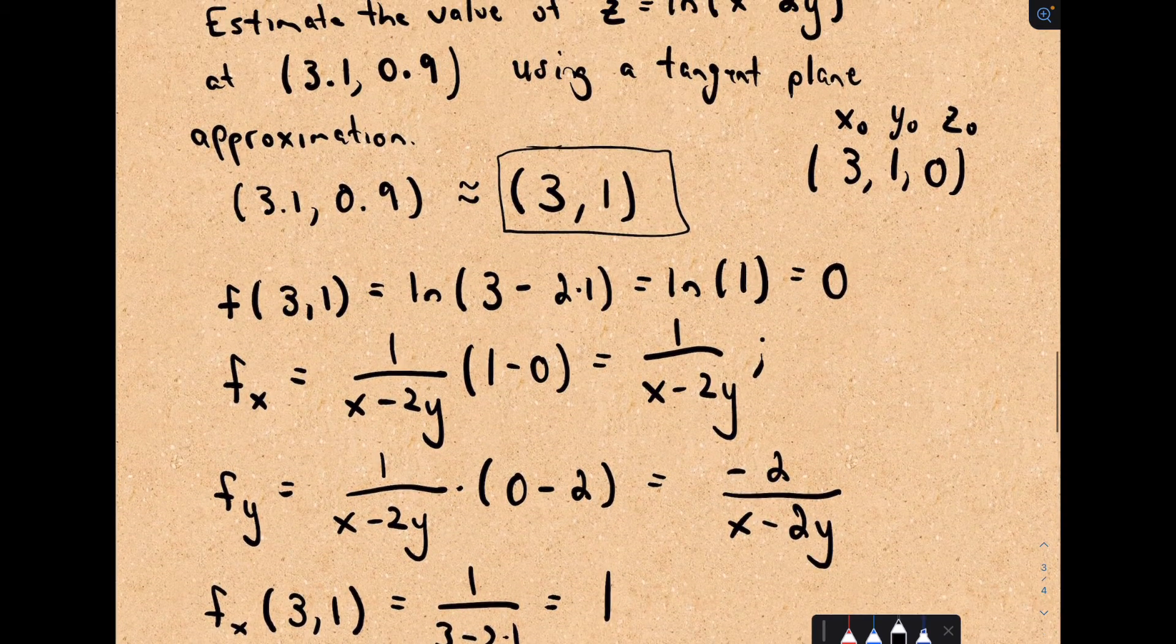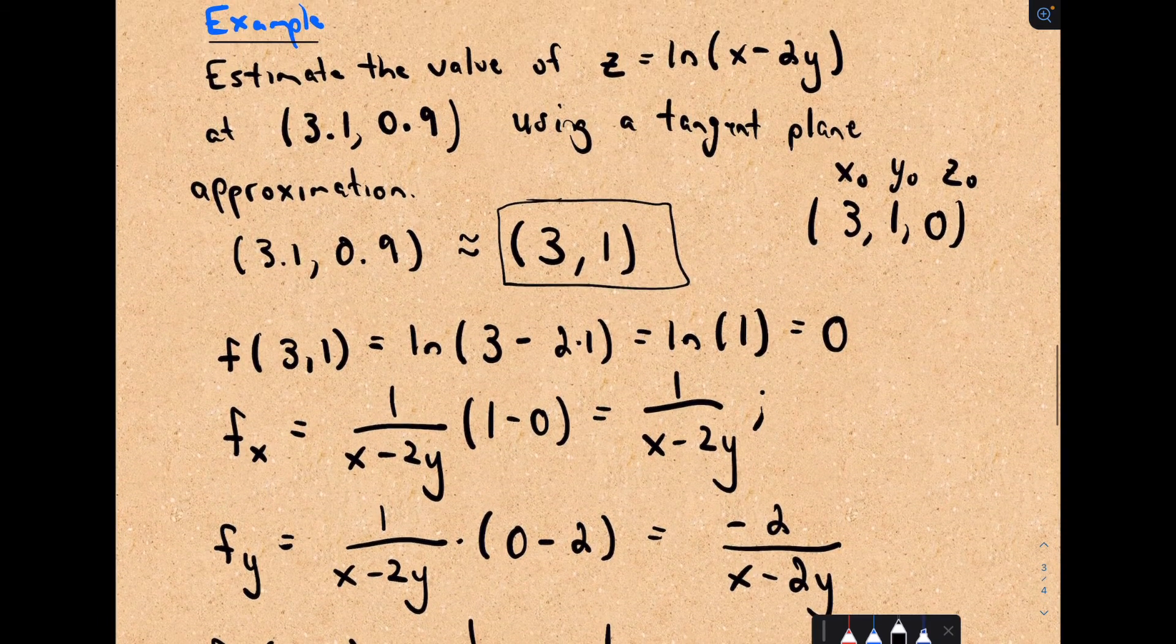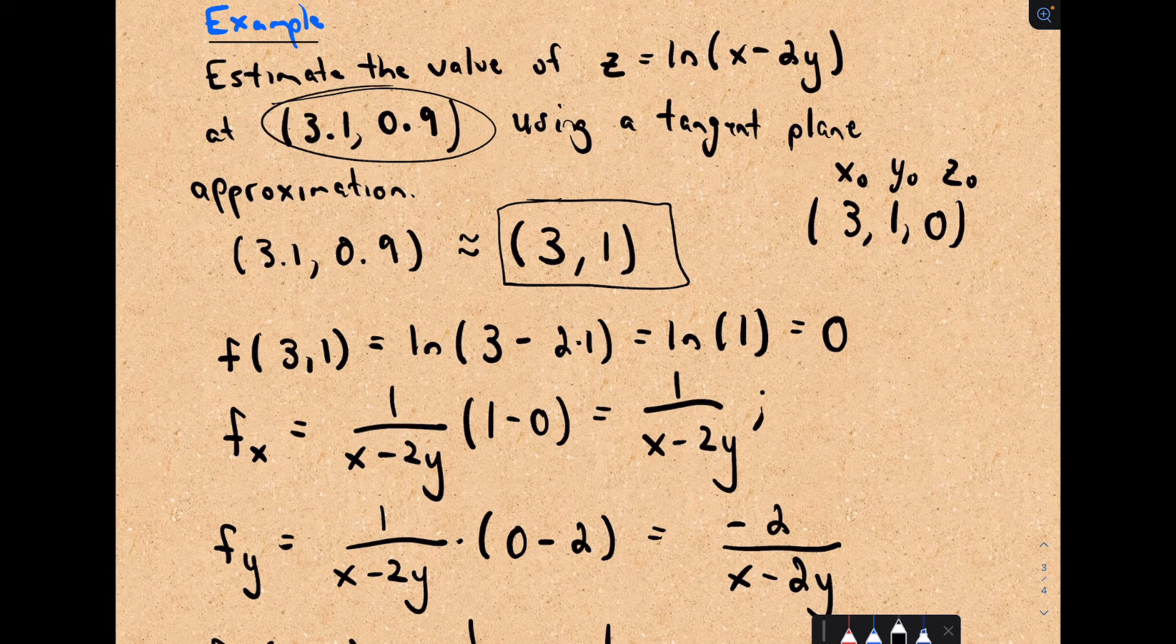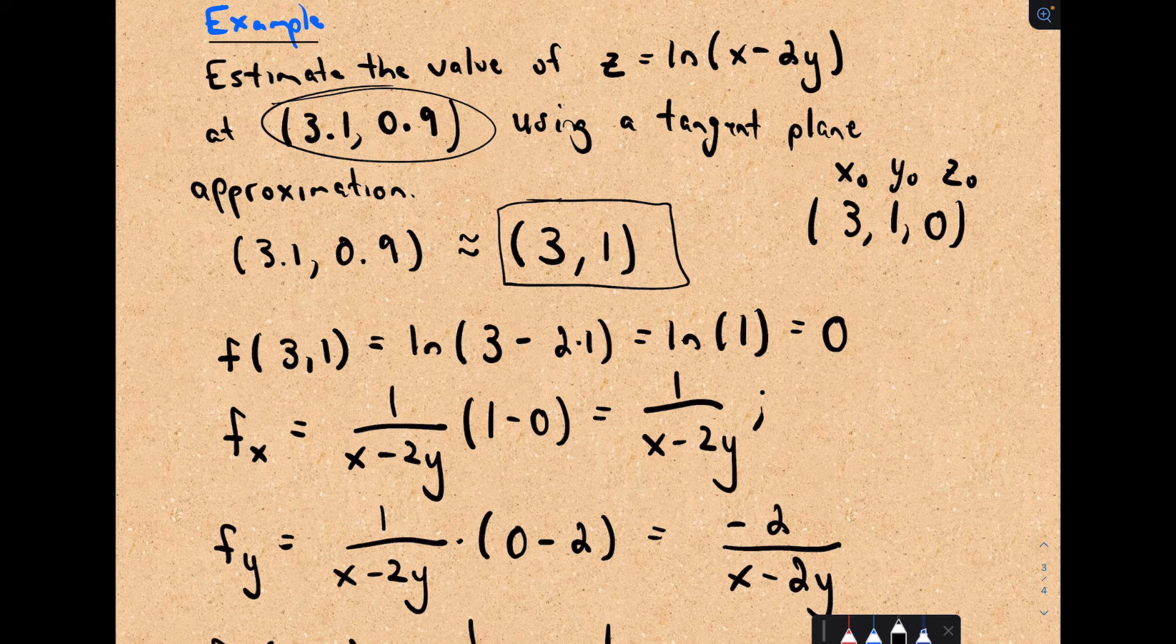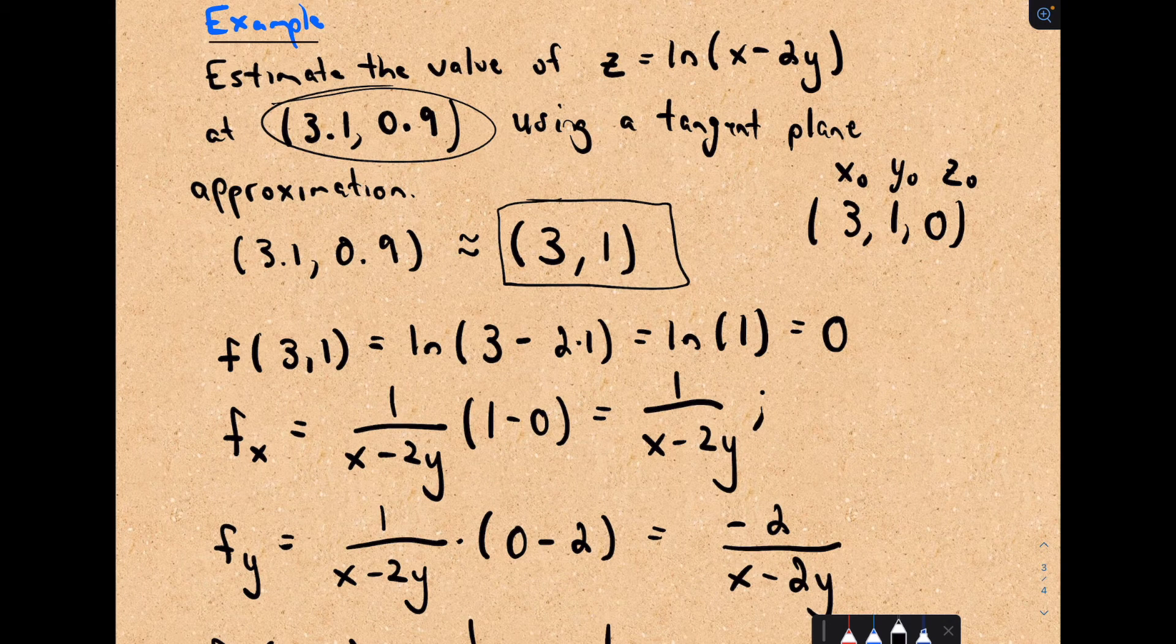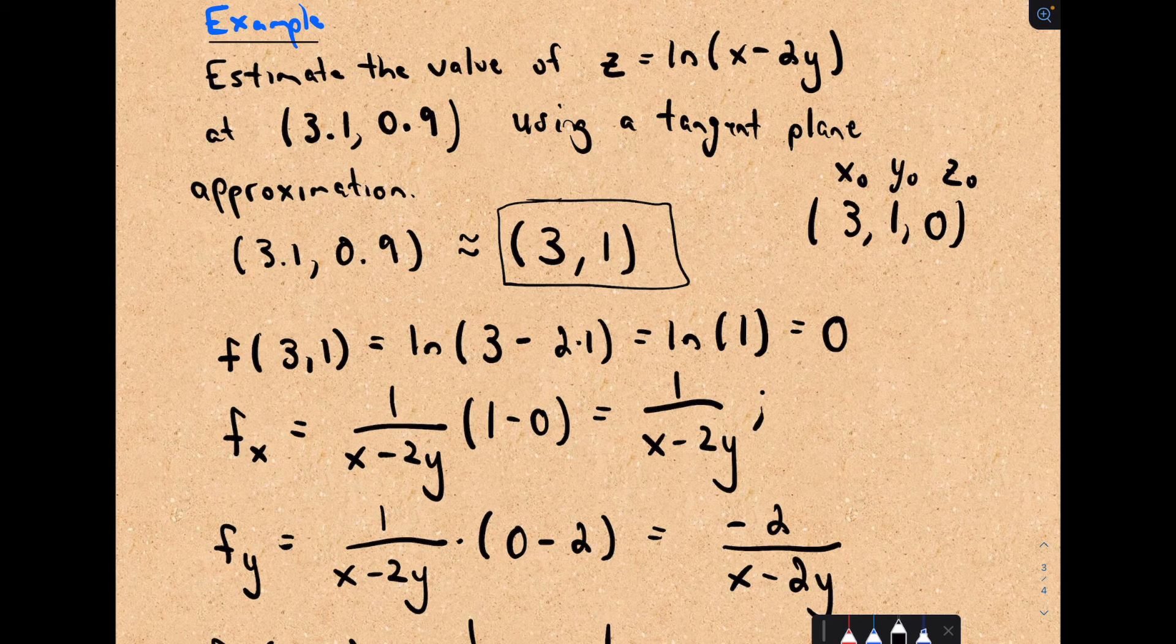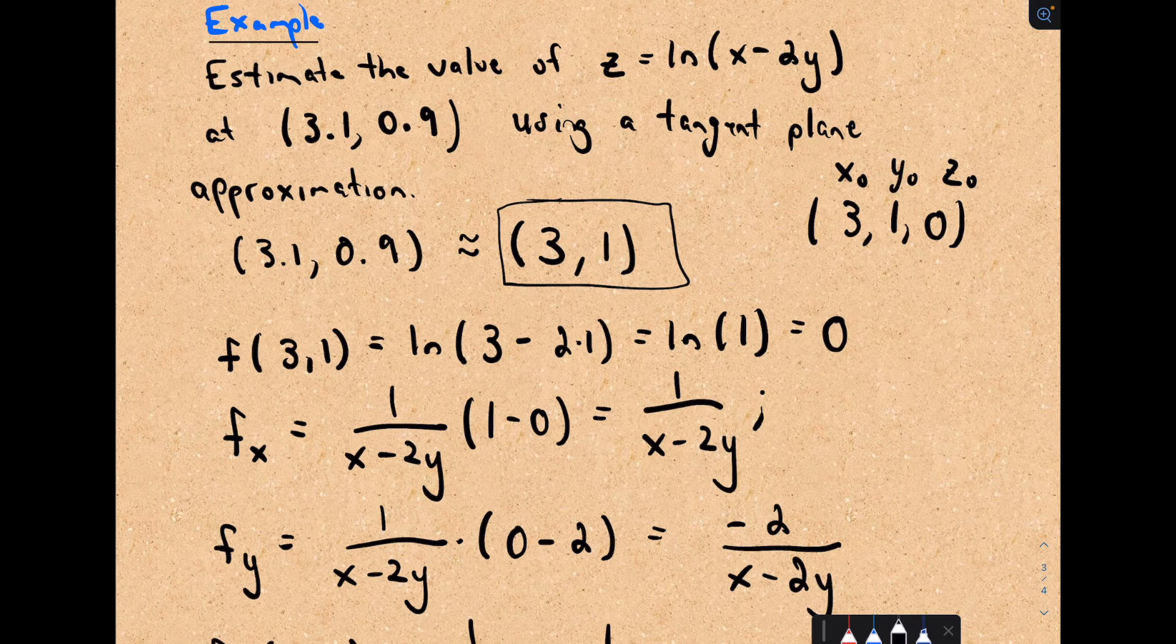So that's the idea. You're just using these tangent planes to approximate values. And if they give you something like this, approximate it at 3.1, 0.9, pick numbers that are obviously close to that. They should be set up nicely so that things work out hopefully without too much trouble.